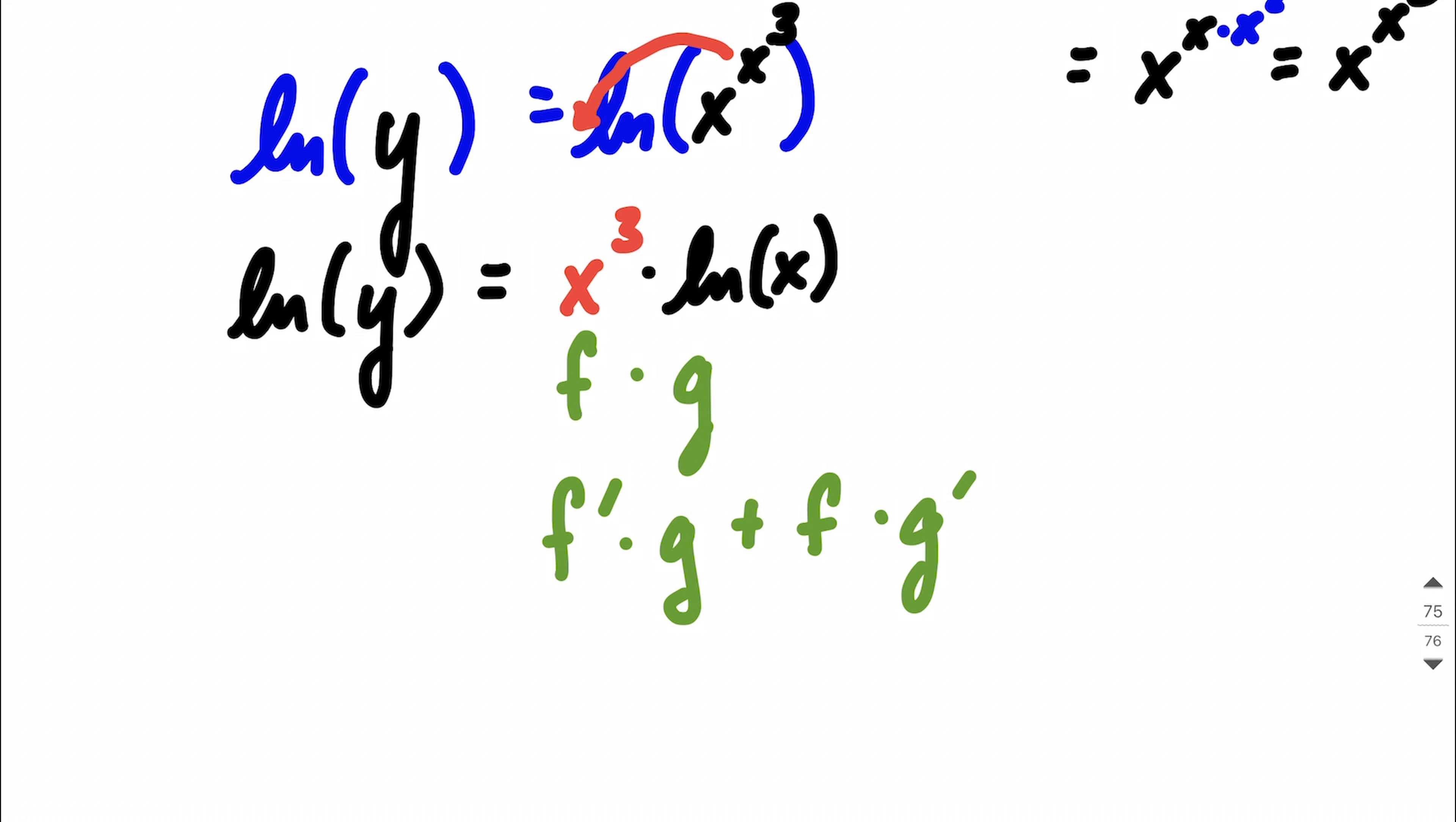So systematically, just going through, trying to take this derivative. First, let's start on the left-hand side. We have the natural log of y. Its derivative is going to be 1 over y. But we're differentiating with respect to x. So we could either put a dy dx on this side, or a y prime. I'm using the prime notation for this example.